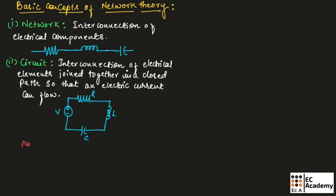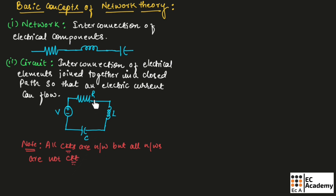Here, we need to note that all circuits are networks but all networks are not circuits. Since each element is interconnected, we can call this circuit a network. But in a network, all elements are interconnected but they are not connected in a closed path. That is why a network might not be a circuit. So, all circuits are networks but all networks are not circuits.